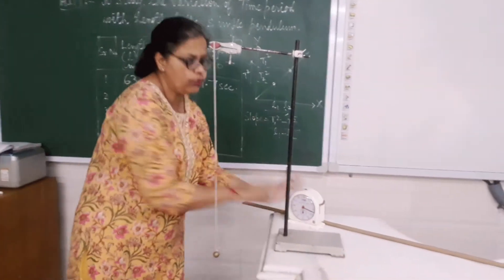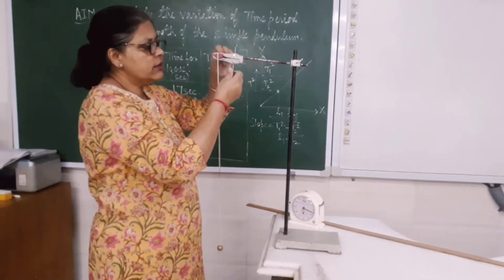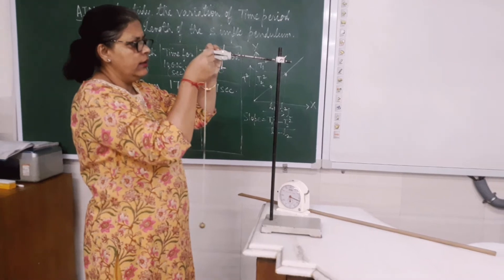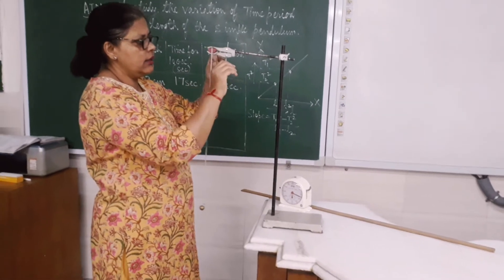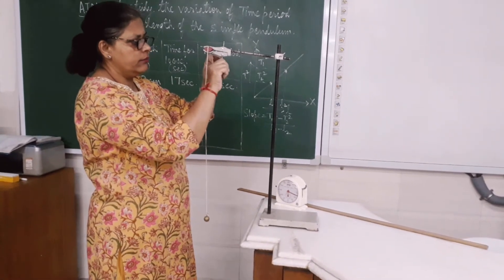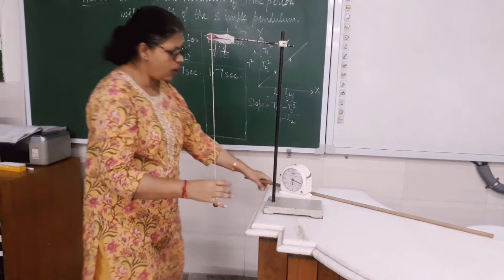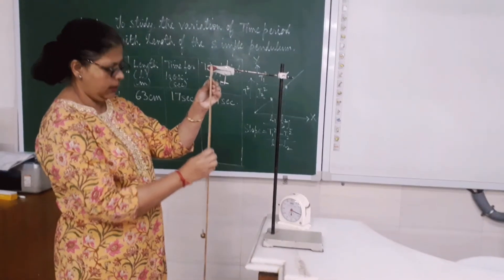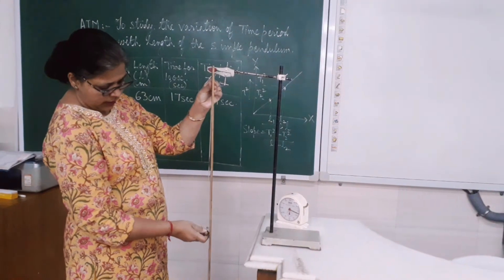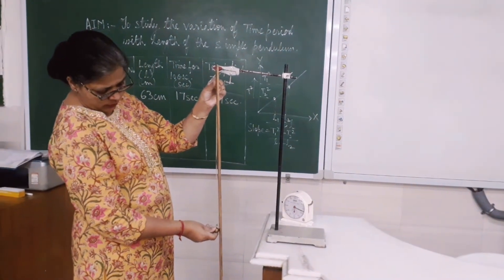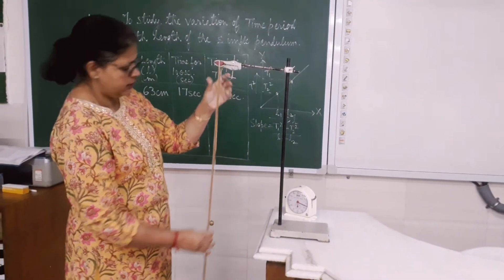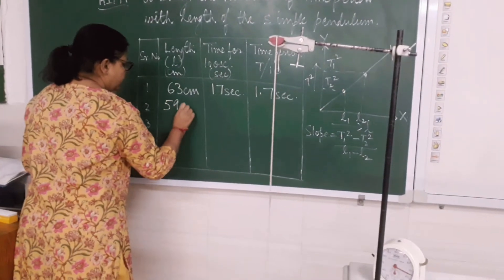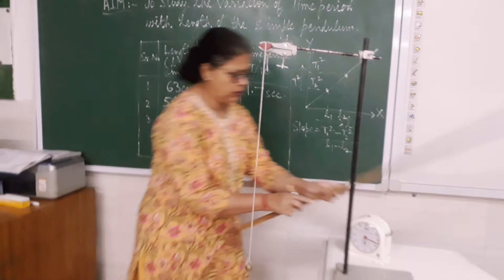Now this is my first reading. I will slightly decrease the length. Here I have decreased the length. Now I will again measure the length of this pendulum with the help of the meter rule, and it is showing 59 centimeters. So you can see, children, now the effective length is 59 centimeters.